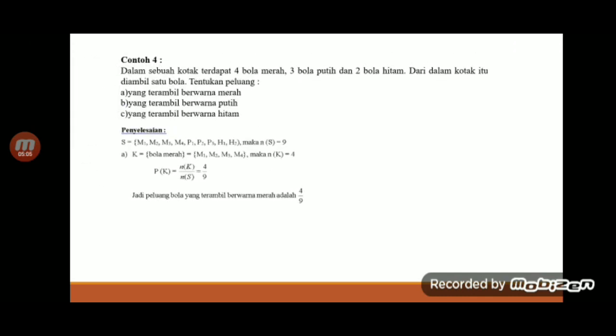Dalam sebuah kotak terdapat 4 bola merah, 3 bola putih, 2 bola hitam. Dari dalam kotak itu diambil 1 bola. Tentukan peluang yang terambil bola merah itu yang A, yang B yang terambil bola putih, sedangkan C adalah peluang yang terambil berwarna hitam. Berarti disini dicari dulu ruang sampel.